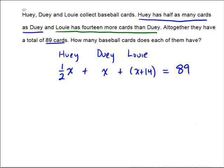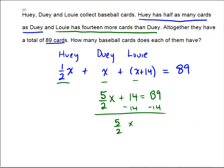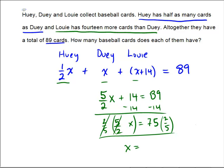Now we're in algebra land. Let's combine like terms. Half an x, plus an x, plus an x is 2 and a half x's, or 5 halves x, plus 14, equals 89. Subtract 14 from both sides: 5 halves x equals 75. Multiply both sides by 2 fifths, and x equals 30.